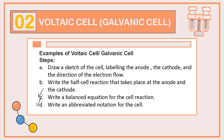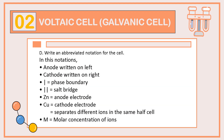In the abbreviated notation, your anode will be written on the left and the cathode will be written on the right. A single line represents the phase boundary, and a double line represents the salt bridge. To better understand this, let's look at the working mechanism of a Galvanic Cell.